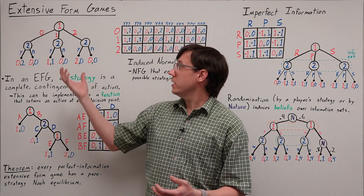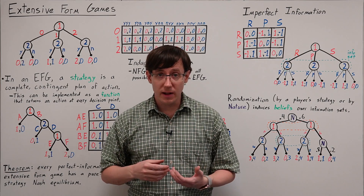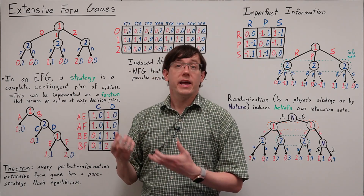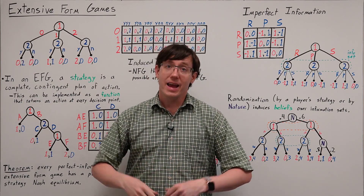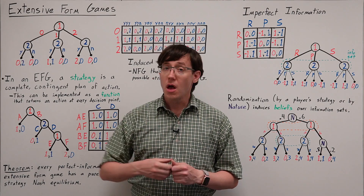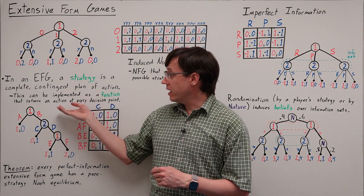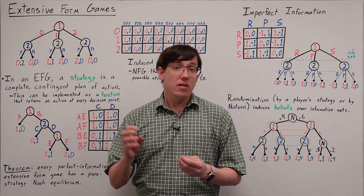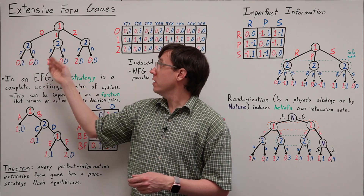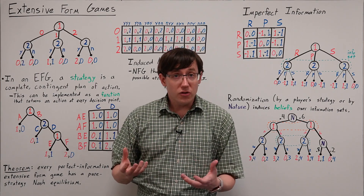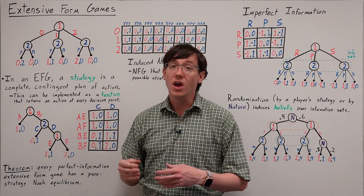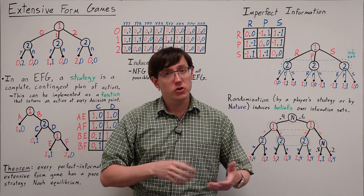If we want to analyze an extensive form game, we need to think about how the tools and concepts we have developed, like strategies and equilibria, relate to this sort of model. We think of a strategy in an extensive form game as a complete contingent plan of action that specifies what a player would do at any of their decision nodes. A good way to think about this is that a strategy can be implemented as a function that takes as input any of the decision nodes for that player and produces as output an action. These functions constitute pure strategies, and we can also think about players using mixed strategies where they randomize their choice of what program should govern their behavior.